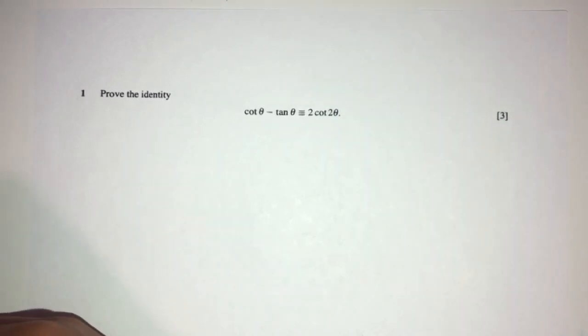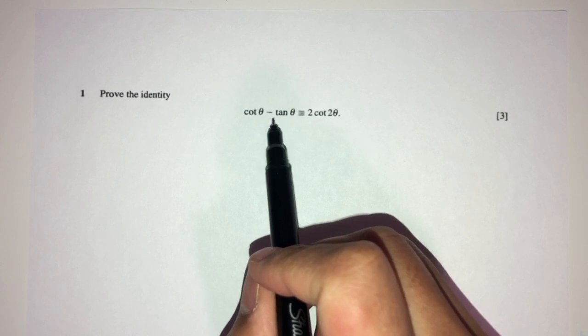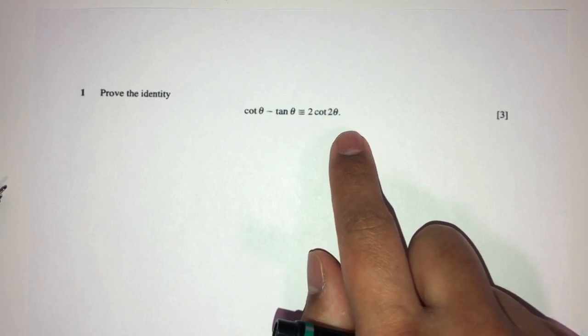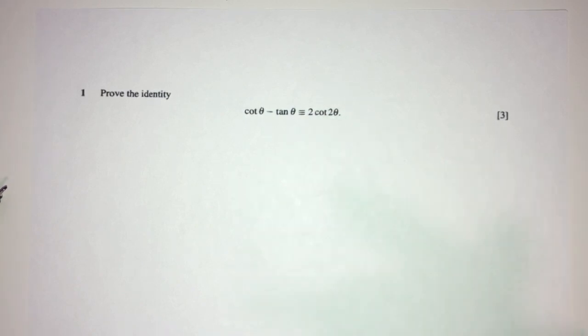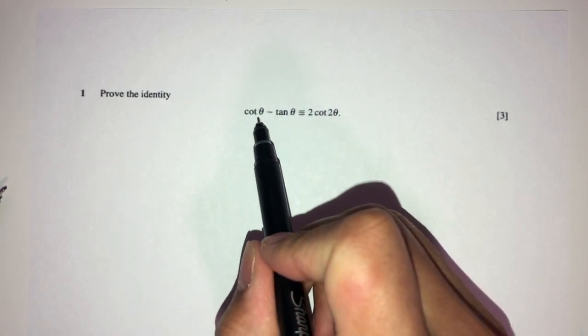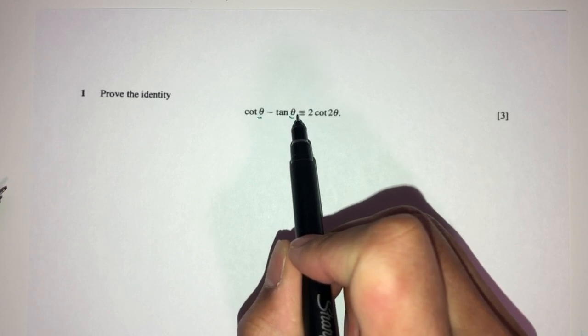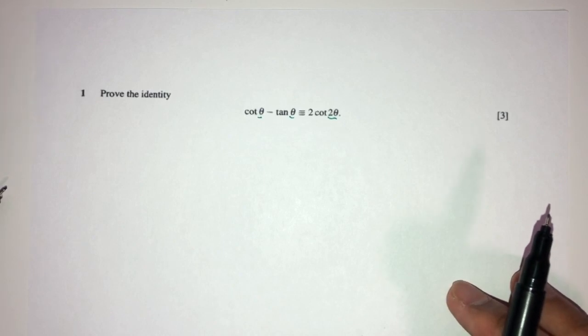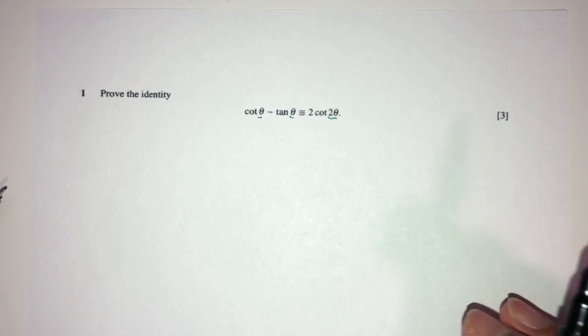So now we have question number 1. We have to prove the identity cot θ - tan θ = 2 cot 2θ. Now, obviously, we usually proceed from the left-hand side to prove that it is equal to the right-hand side. But you can obviously do the opposite. I will just do the usual thing, from left to right.